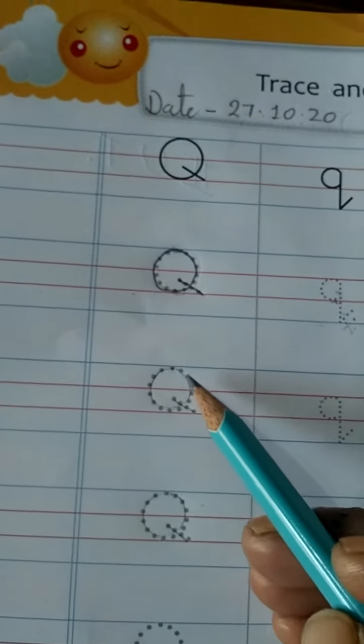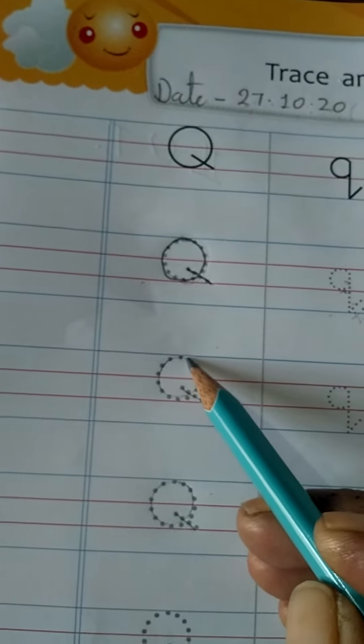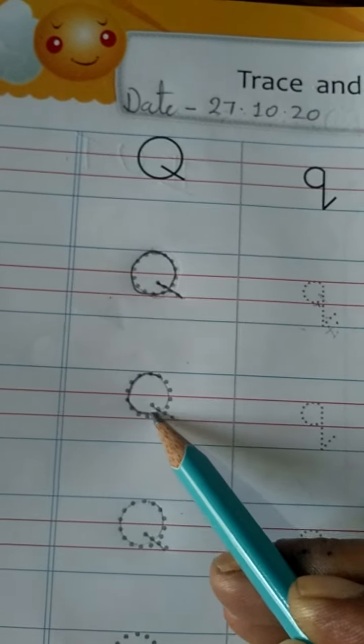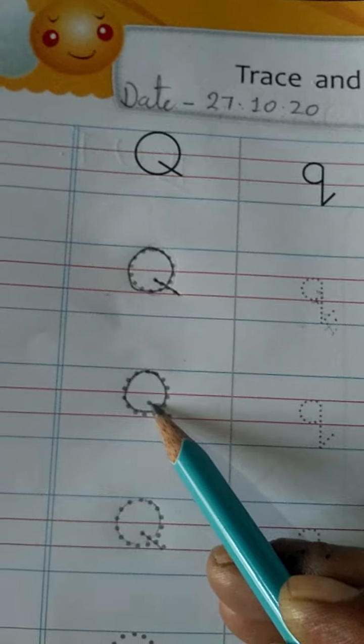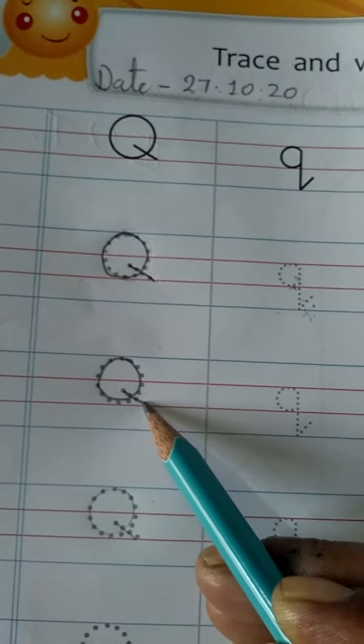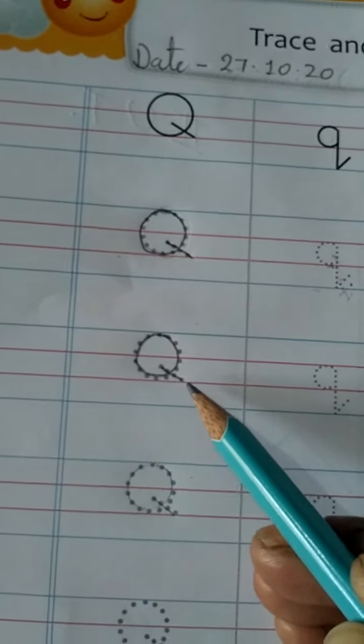Repeat again. Start from the top, draw a circle, and small slanting line to touch the bottom. This is capital letter Q.